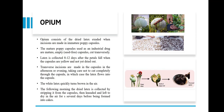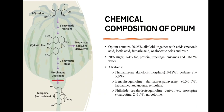Opium consists of the dried latex exuded when incisions are made in immature poppy capsules. These mature poppy capsules, used as an industrial drug, are mature empty scarified capsules cut transversely. Latex is collected 12 days after the petals fall when the capsules are yellow and not yet dried out. The white latex quickly turns brown in the air. The following morning the dry latex is collected by stripping it from the capsules, then kneaded and left to dry in the air for several days before being formed into cakes.